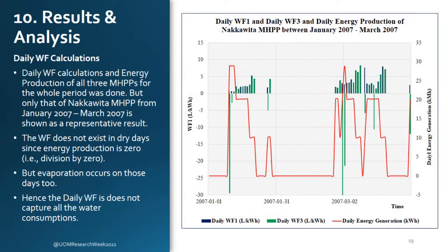The water footprint was calculated daily, monthly and annually using gross evaporation and net water balance methods. Looking at the daily water footprint sample, daily energy production hits zero on dry days. Mathematically, water footprint cannot exist on such days, but in reality water consumption in the form of evaporation occurs nonetheless. Since a major proportion of days in the dry months give no water footprint values, daily water footprint is unable to capture the true water consumption of mini hydropower plants to a satisfactory level.